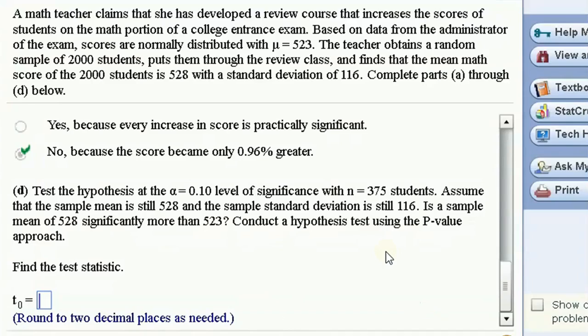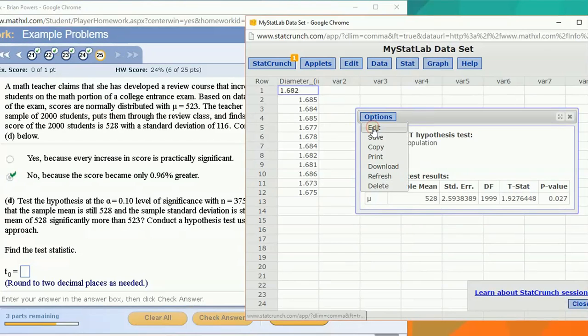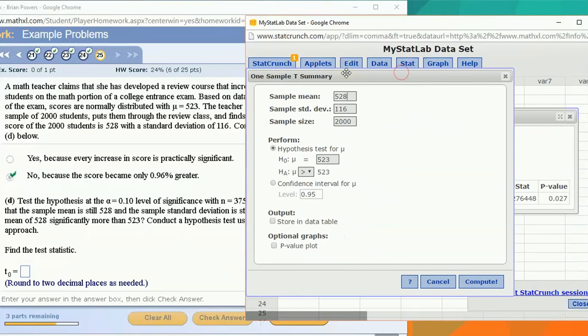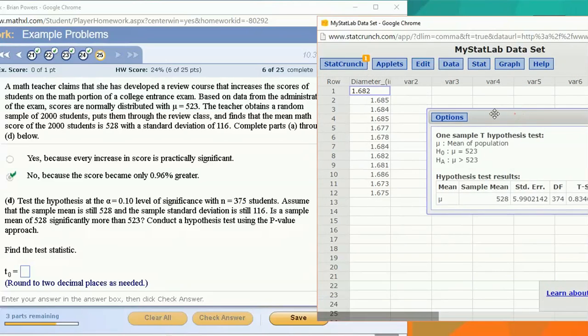Alright, so now let's take another sample. Let's edit our hypothesis test. So now suppose our sample mean is still 528, the sample standard deviation is still 116, but suppose the sample size was 375 instead, smaller sample size. Now let's see what the results from the hypothesis test would be.